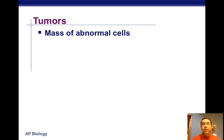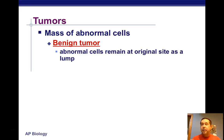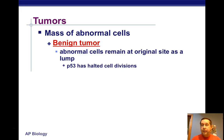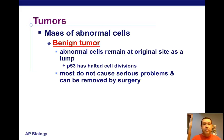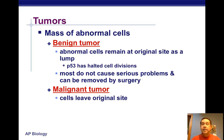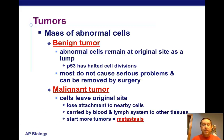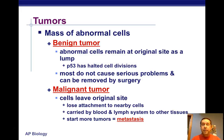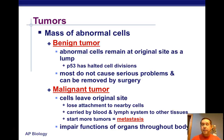A tumor is a mass of abnormal cells that crowds out normal tissue. A benign tumor is an abnormal lump that stays at the original site — it's often not going to cause too many problems depending on where it is, may or may not have to be removed, and P53 has halted cell division in it. A malignant tumor, on the other hand, can metastasize — spread from the original site, carried by blood vessels to other tissues to create a new tumor — and can impair functions of organs throughout the body.